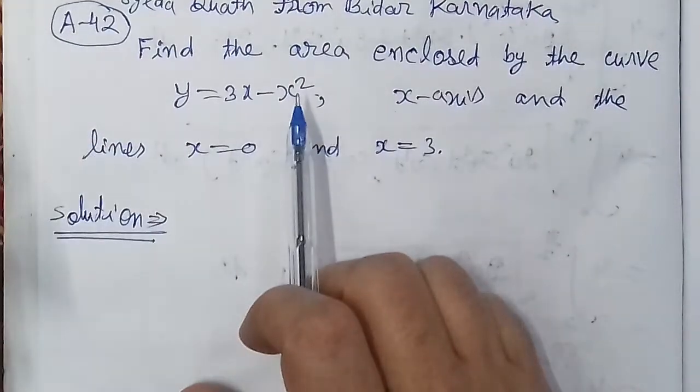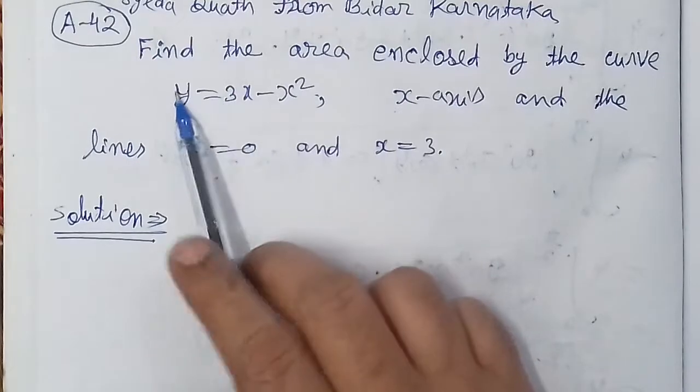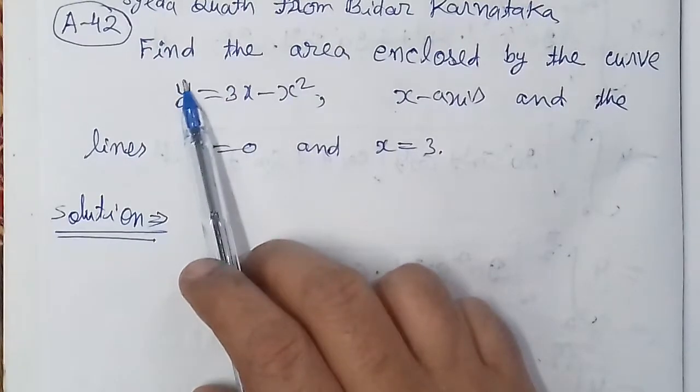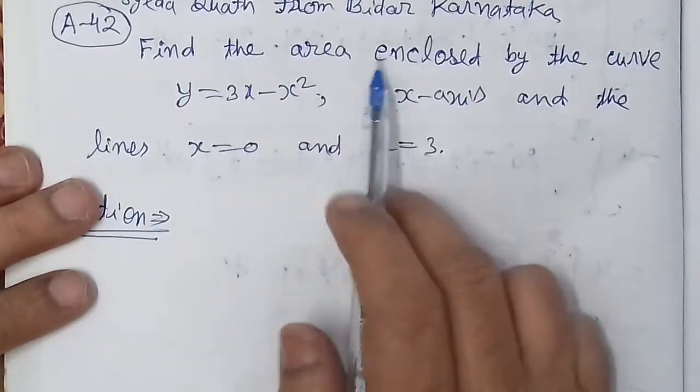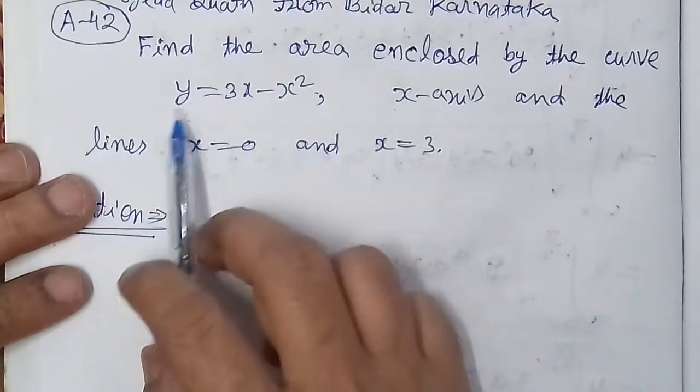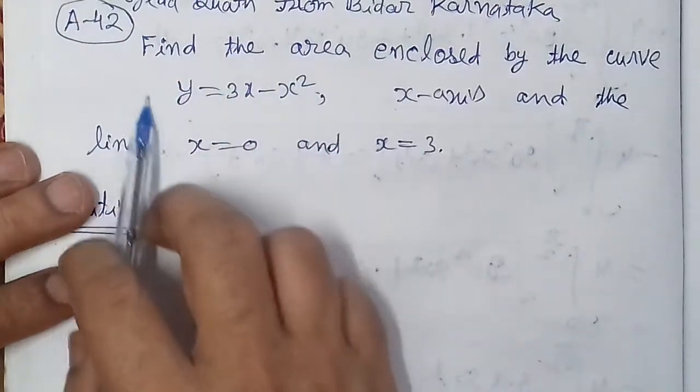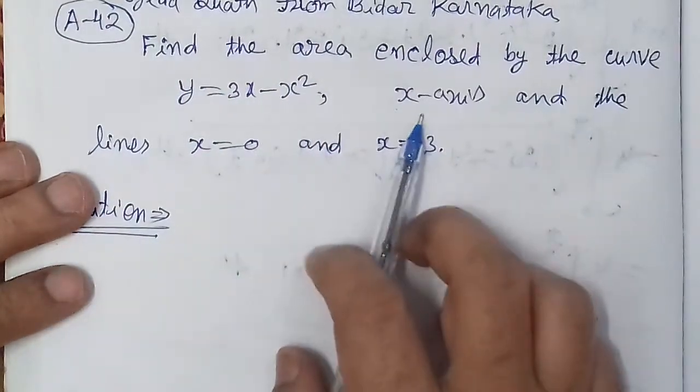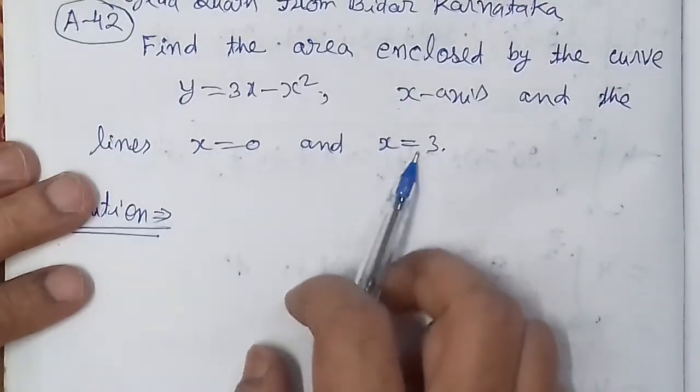a problem in integral calculus related to quadrature. Find the area enclosed by the curve y equals 3x minus x squared, the x-axis, and the lines x equals 0 and x equals 3.